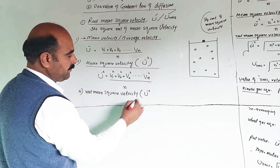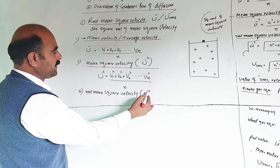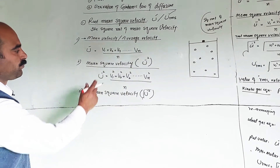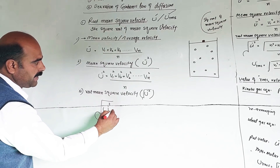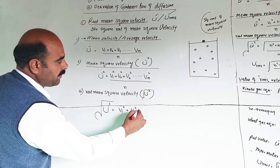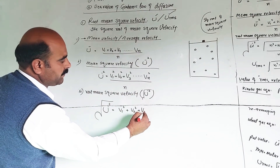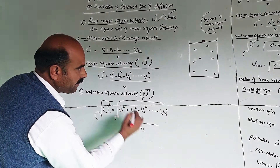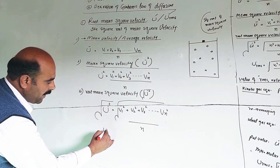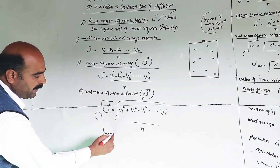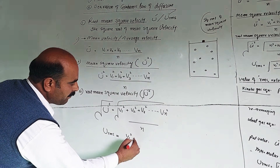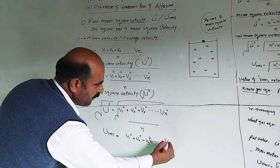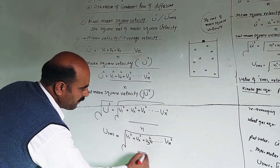Root mean square velocity is the square root of mean square velocity. Its formula is: u_rms = √[(v1² + v2² + v3² + ... + vn²) / N].